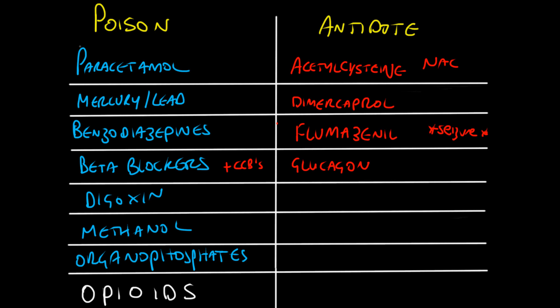For digoxin, you would use digibind — essentially a digoxin immune Fab — which works by binding to digoxin, rendering it unable to bind to its action sites on target cells. Signs indicating use of digibind include a hemodynamically unstable arrhythmia, end organ damage, digoxin level greater than 4 nanograms per mil in chronic ingestion, or greater than 10 nanograms per mil in acute ingestion, and a potassium greater than 5 with symptomatic hyperkalaemia.